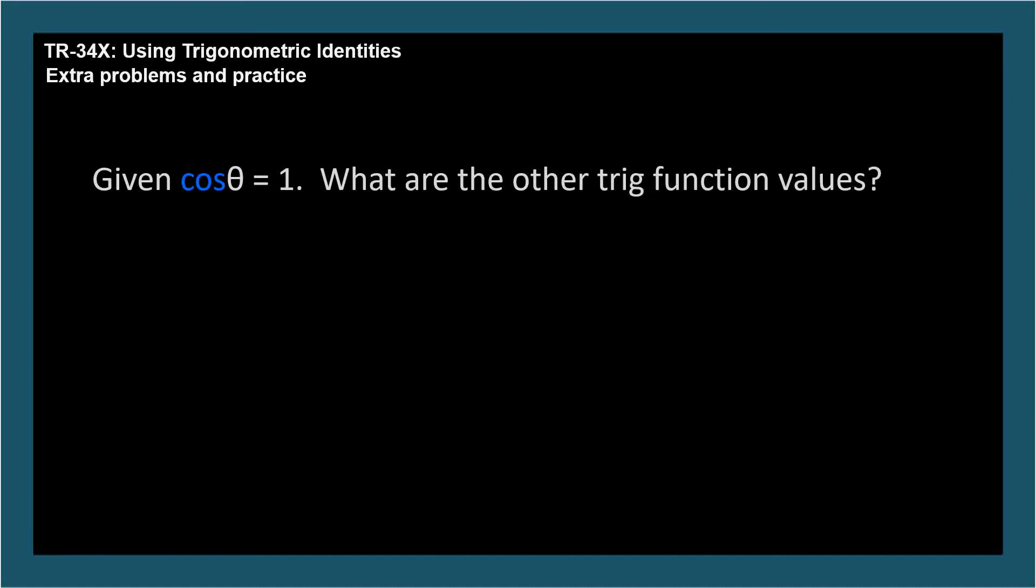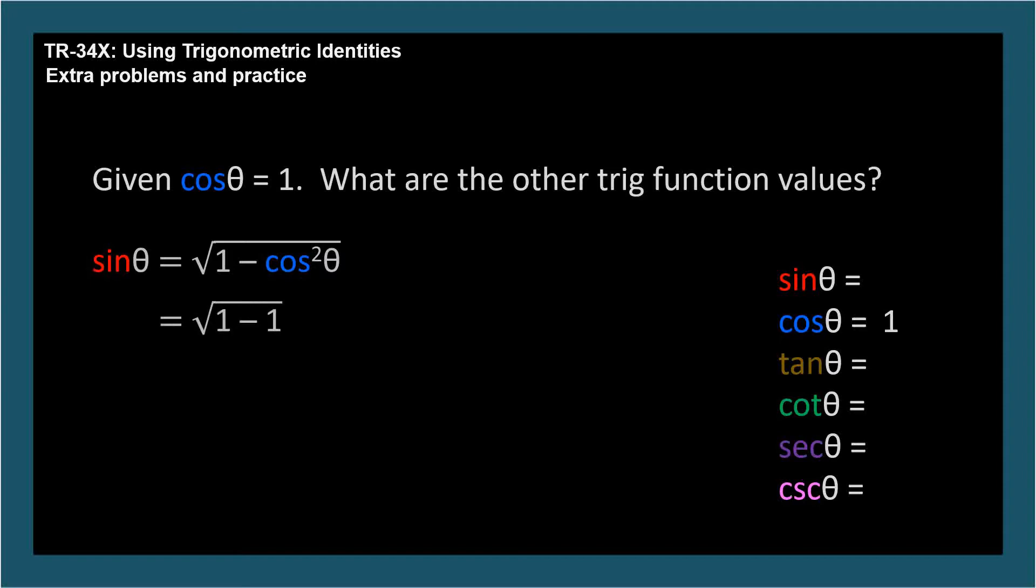Given that cosine theta equals 1, what are the other trig function values for angle theta? Let's build a checklist and we can already fill in cosine equals 1. Given sine or cosine, we can find the other with the Pythagorean identity. Plugging in 1 for cosine theta, we end up with sine theta equals 0. Visualizing our unit circle, when cosine is 1, sine is 0. So we can add sine theta equals 0 to our checklist.